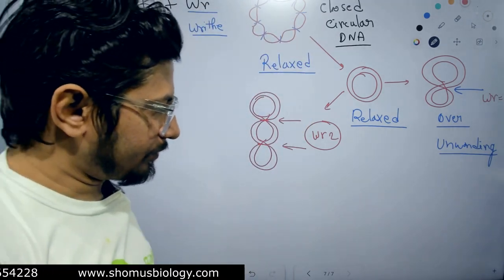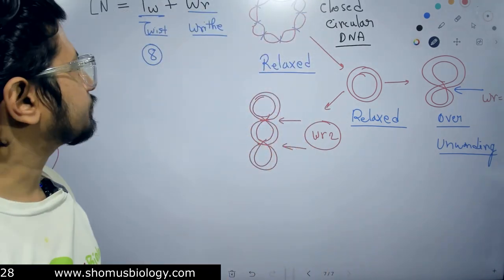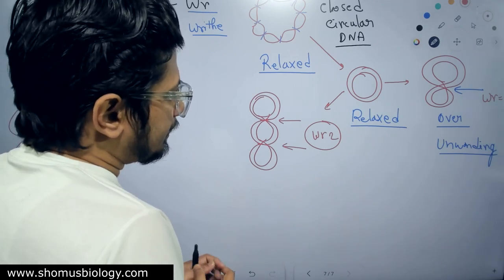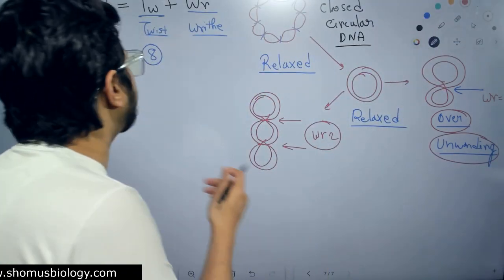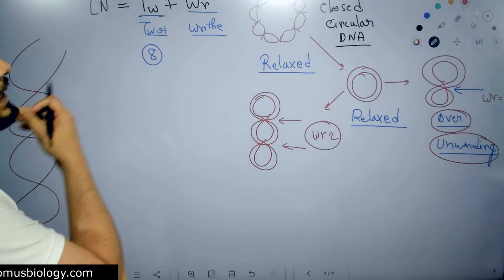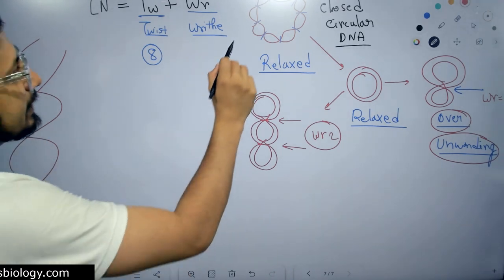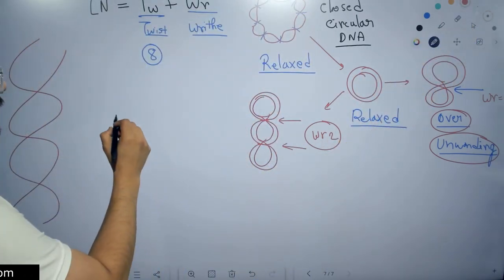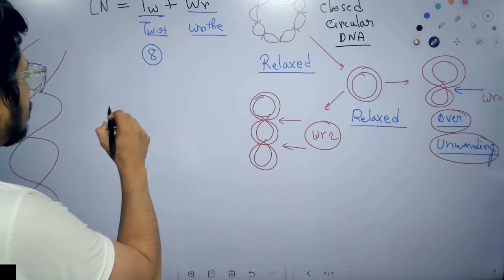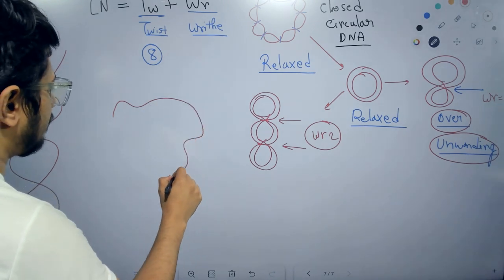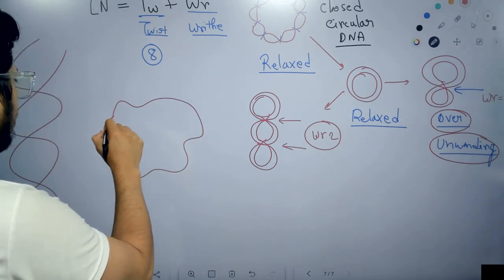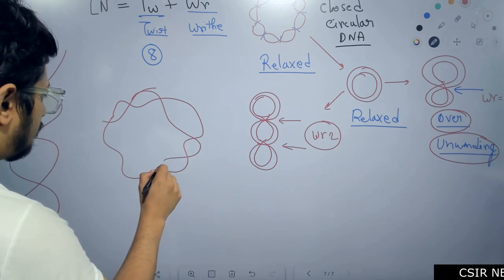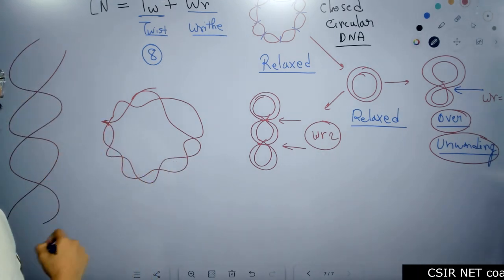The idea of overwinding and underwinding is more predominant in the case of twist. What we can clearly see in the case of twist is this: let's say this is the relaxed state of the closed circular DNA with eight twists. Now if we add more twists, drawing something like this, we get nine twists.